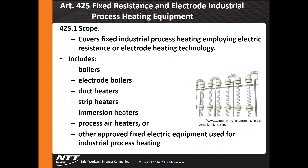Article 425 covers industrial boilers — electrode boilers, ductors, and strip heaters. Where this came from is that the technical complexity of these high-level, larger boilers actually went beyond what was in the original codes. So they created Article 425 to handle fixed industrial process heat and process heating equipment. We're using more and more of these systems.